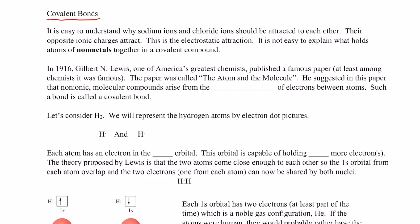Now, it's easy to understand why sodium and chloride ions are attracted to each other. Sodium's had a positive charge, chloride's had a negative charge, their opposite charges attract, and that was the electrostatic attraction I just talked about. However, it's not so easy to explain what holds atoms of non-metals together in what's called a covalent compound.